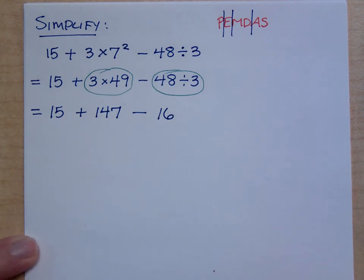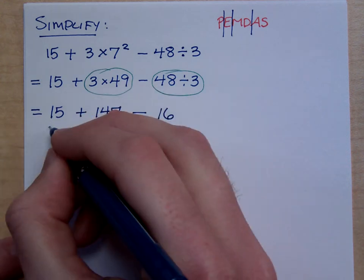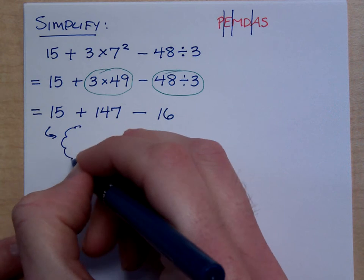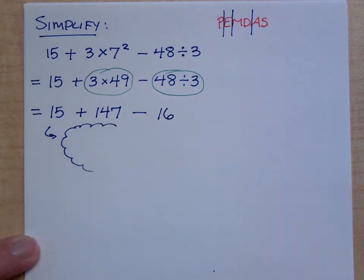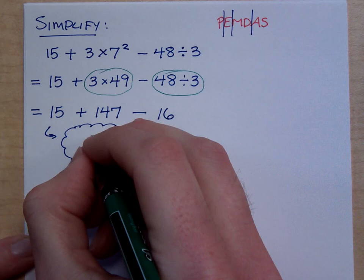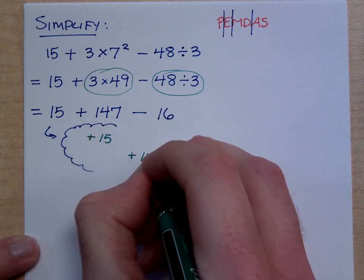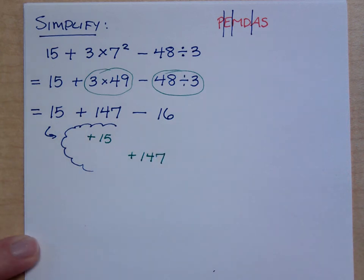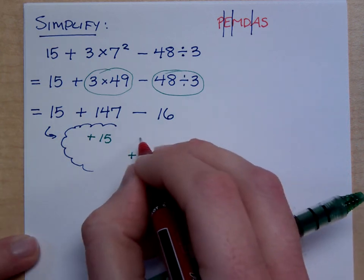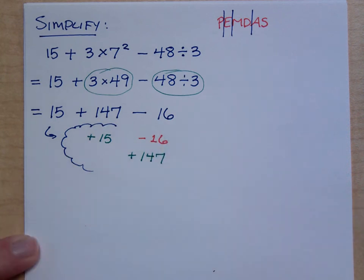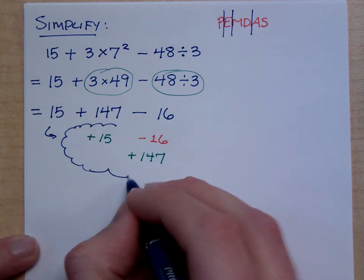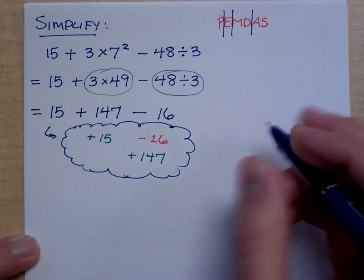Now the only thing that I have left is addition and subtraction. Here's what I really need you guys to see — this should be going on inside your head, like it goes on inside my head. I have a positive 15, a positive 147 to combine, and then I see this as a negative 16.